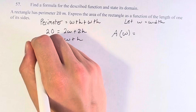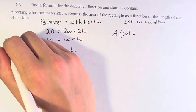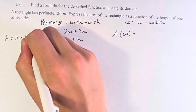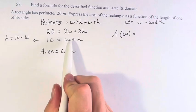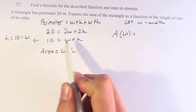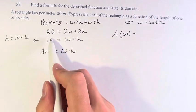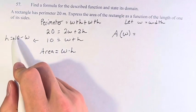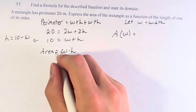We're going to rewrite this as h is equal to 10 minus w. How did I do that? I subtracted w from this side, which means this cancels out. And I subtracted w from this side, which means we have 10 minus w.